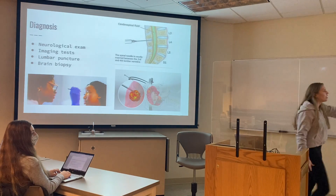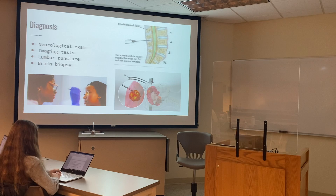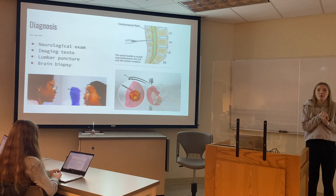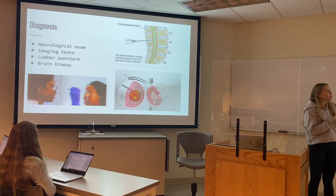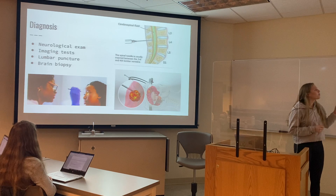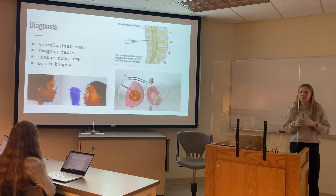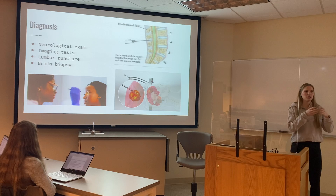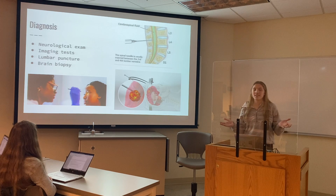Then there is a lumbar puncture, shown in that top picture. We're going to insert a needle into the lumbar vertebrae between levels three and four — that's on your lower back. We'll numb the area so they won't feel it. We're going to take a small amount of cerebrospinal fluid, which is the fluid that surrounds the spinal cord, and test it to see if there are cancerous cells present.